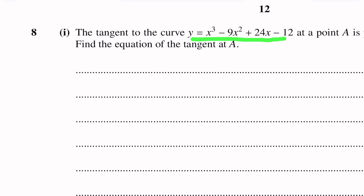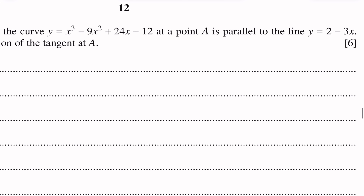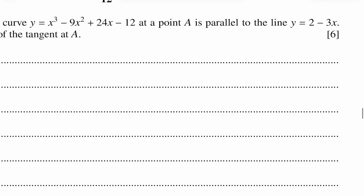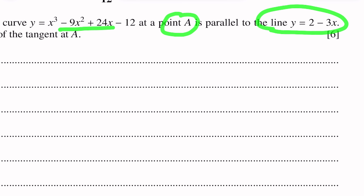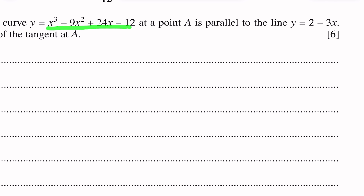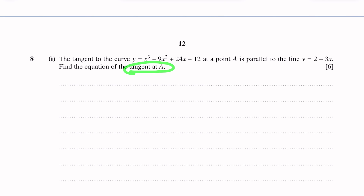This is the equation of the curve. The tangent to this curve at point A is parallel to this line. The gradient of this line and the gradient of the tangent at point A are equal because they are parallel. Find the equation of the tangent at A.